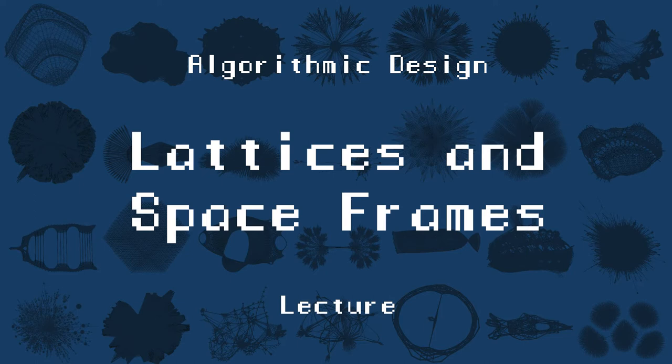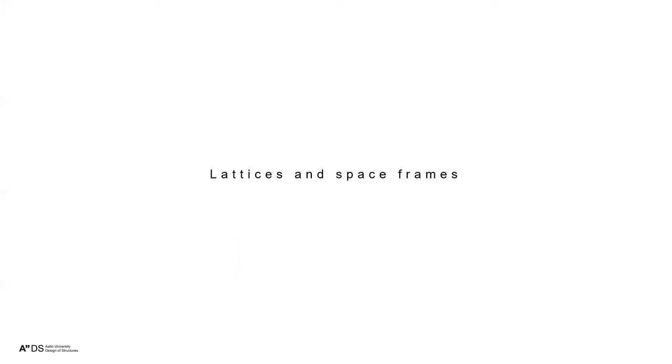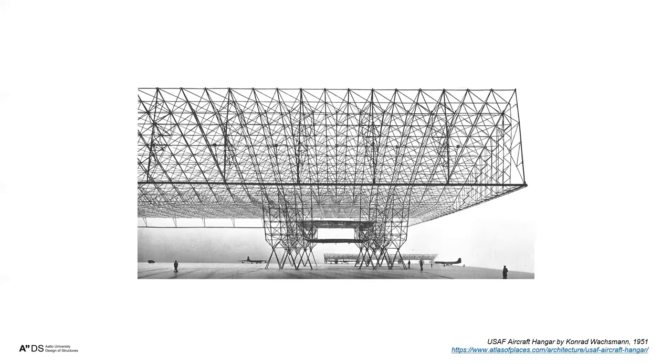The topic is lattices and space frames. It turns out there's a definition of what a lattice is in mathematics, material science, chemistry, physics, and in architecture. Lattices are usually referred to as regular tilings of space or space frames — material arranged in a regular way. It's similar to a crystal, though the exact difference between a crystal and a lattice is hard to define precisely.